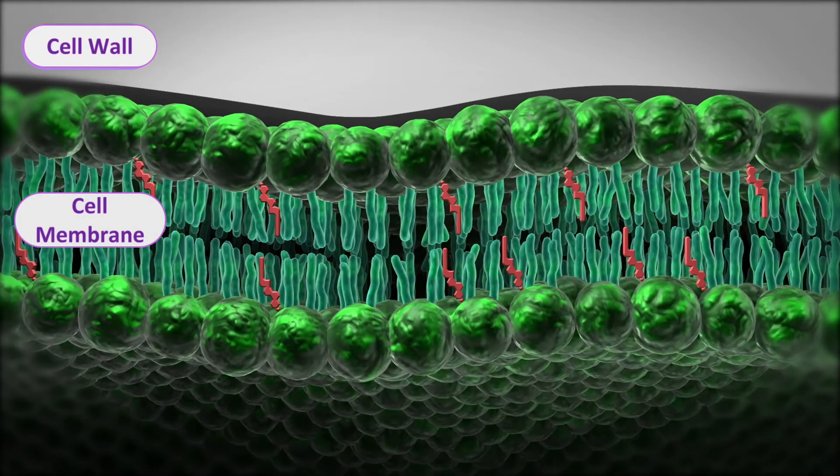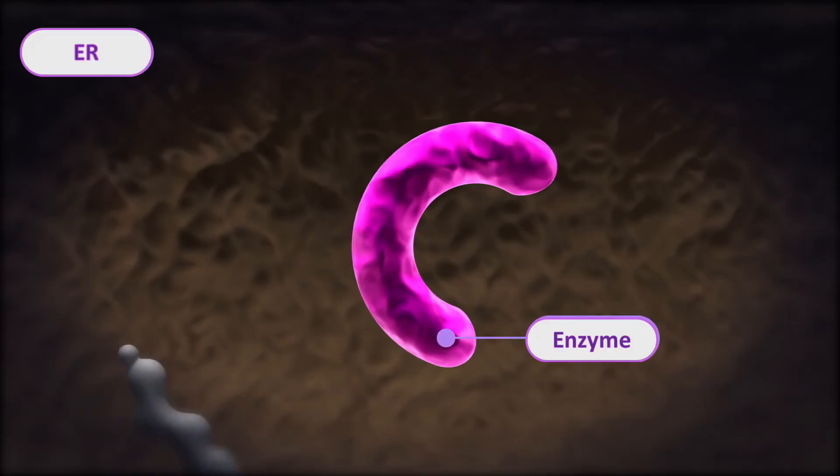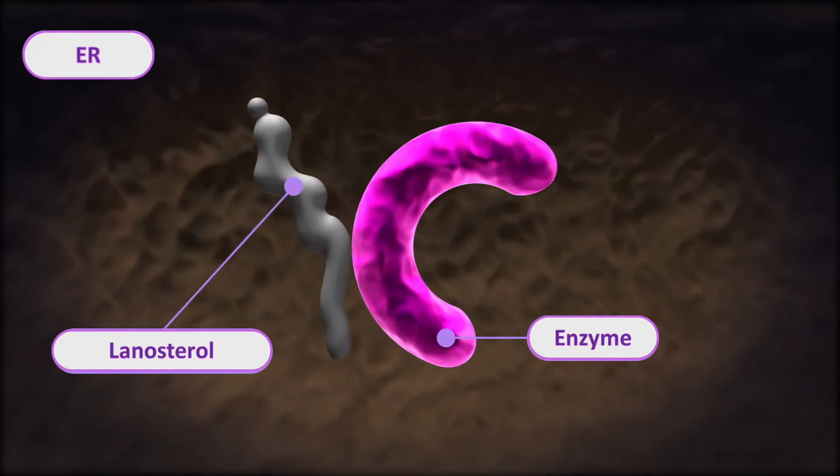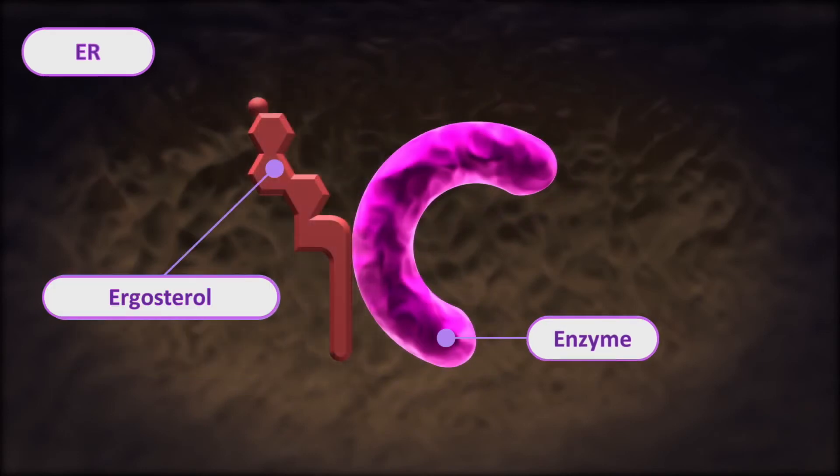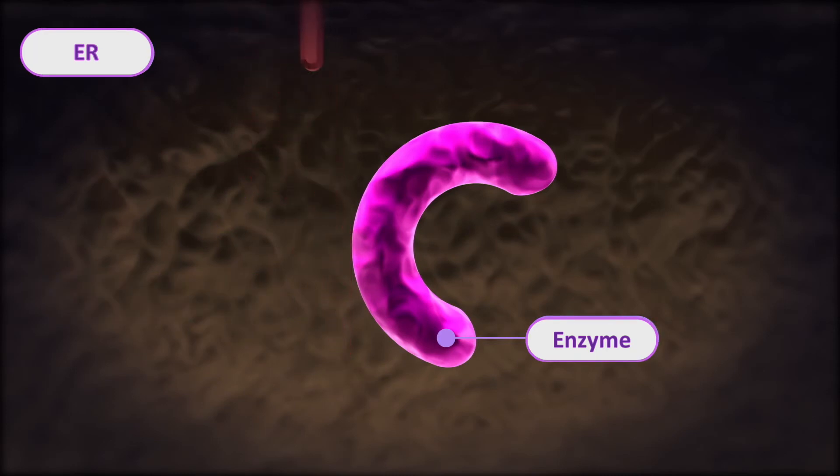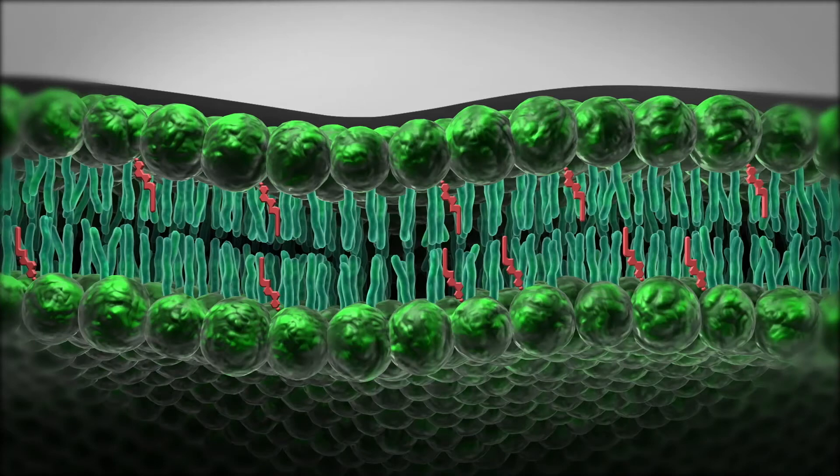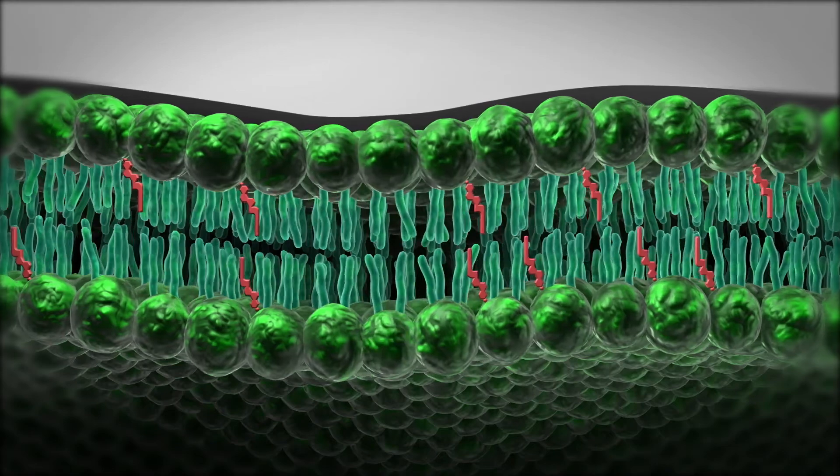Normally in fungal cells such as Trichophyton, lanosterol is demethylated by an enzyme of the endoplasmic reticulum and supplied to the cell membrane as ergosterol. Ergosterol plays a role in maintaining fungal cell membrane fluidity and development.